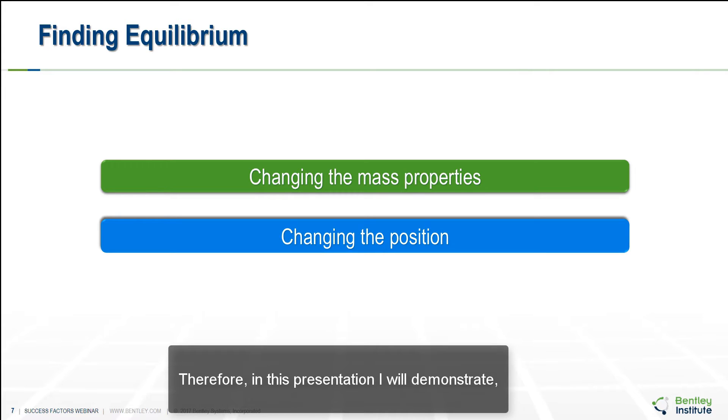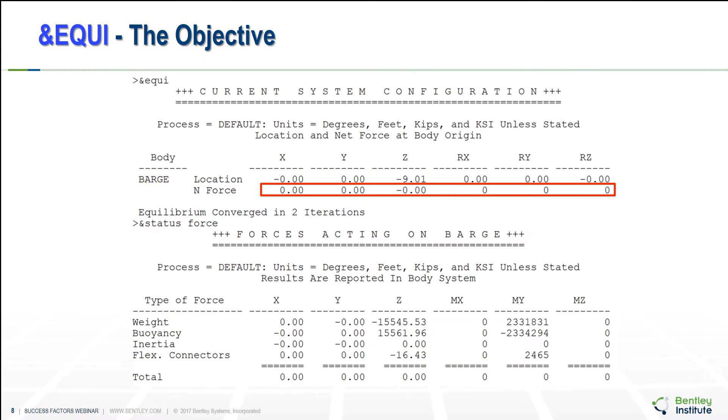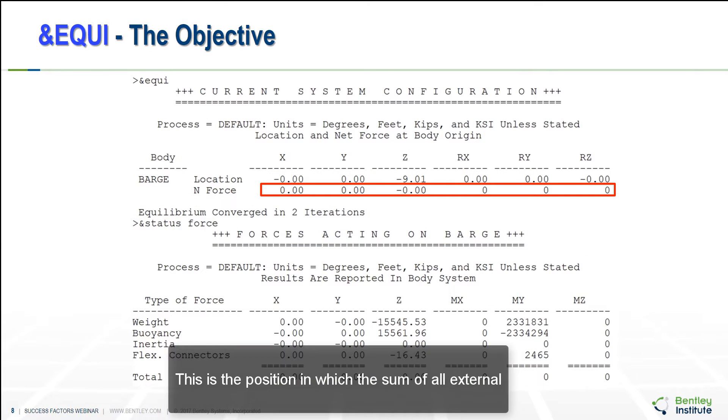Therefore, in this presentation, I demonstrate finding equilibrium by changing the position works with and without connectors. This is because the change in position will change the connector forces and the moment on the body. This is the position in which the sum of all external and restoring forces on the body system equals to zero.